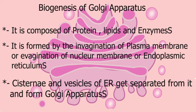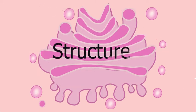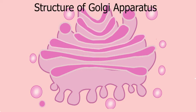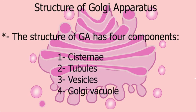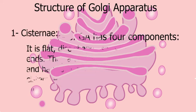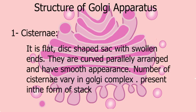Structure of Golgi apparatus: it has four components — cisternae, tubules, vesicles, and Golgi vacuole. Cisternae are flat disc-shaped sacs with swollen ends. They are curved, parallelly arranged, and have a smooth appearance. The number of cisternae varies in the Golgi complex; they are present on one another in the form of stacks.